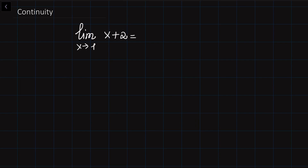Previously, we've seen that when evaluating limits of polynomials — for example, x plus 2 — we can simply substitute x equal to 1 and evaluate the limit. So the limit of x plus 2 as x approaches 1 is simply equal to 3. Functions where we can just substitute the value x equal to 1 into the function are called continuous.